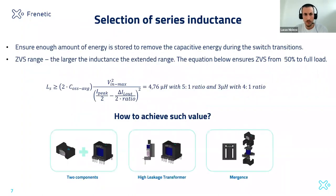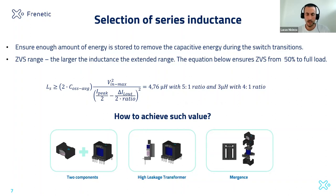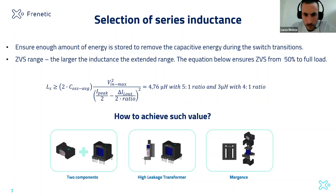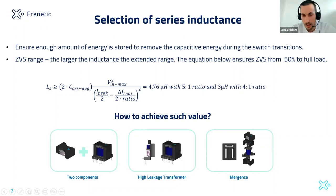We have the turns ratio and magnetizing inductance. Now we need to define what series inductance is required for ZVS. This equation gives the minimum inductance needed to ensure ZVS from 50% load to full load. In this case, with a 5:1 ratio we need 4.76 µH. With the 4:1 ratio, because we have higher peak current, we need less inductance — only 3 µH. You'll see the impact of this on the design.